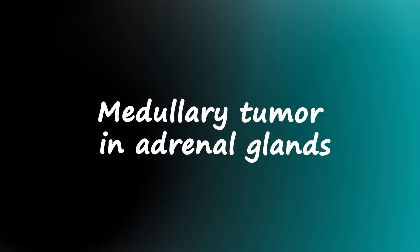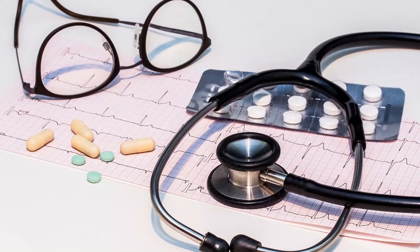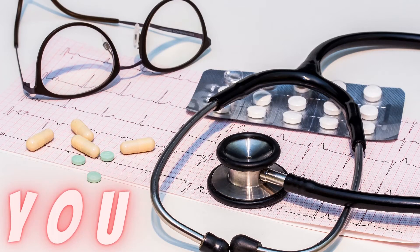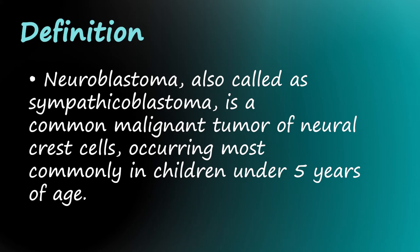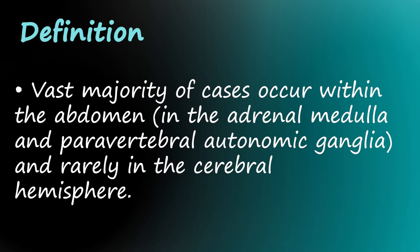Today I will talk about neuroblastoma, a medullary tumor in adrenal glands. Neuroblastoma, also called sympathicoblastoma, is a common malignant tumor of neural crest cells, occurring most commonly in children under 5 years of age. The vast majority of cases occur within the abdomen, in the adrenal medulla and paravertebral autonomic ganglia, and rarely in the cerebral hemisphere.